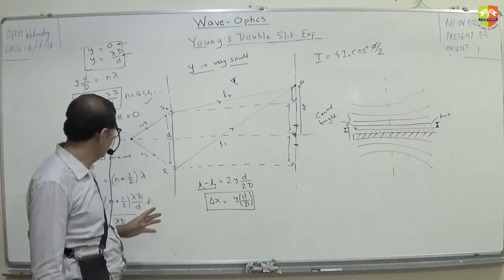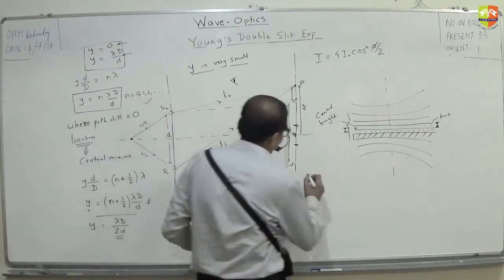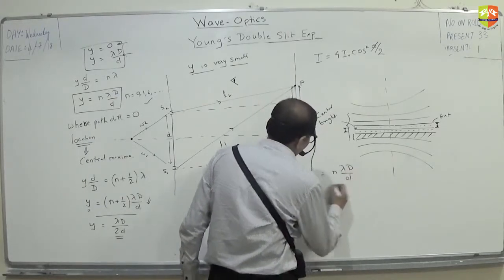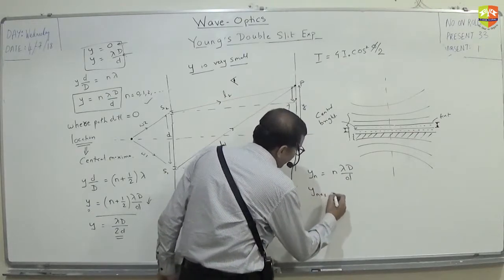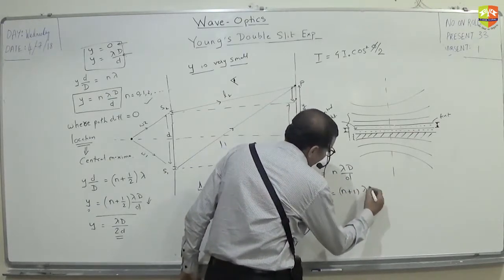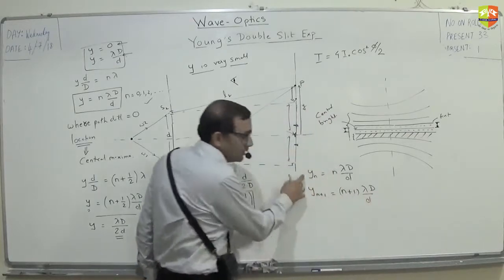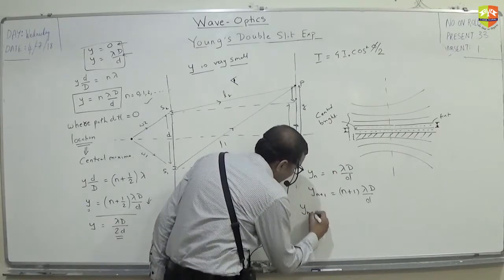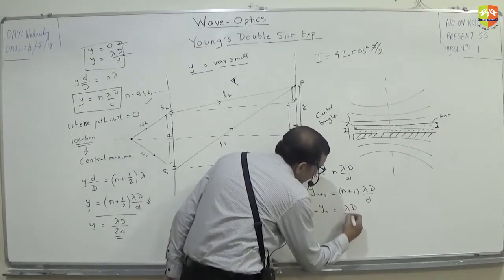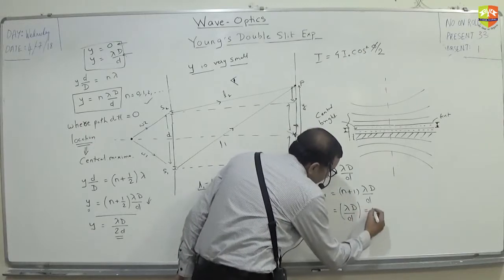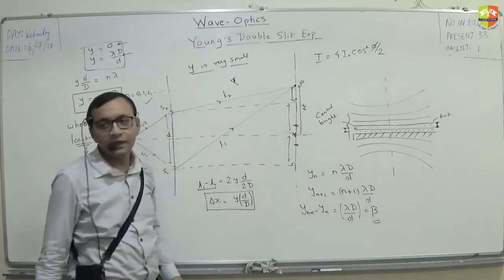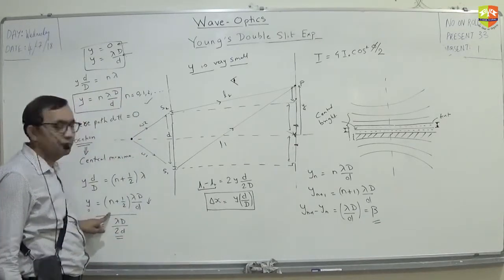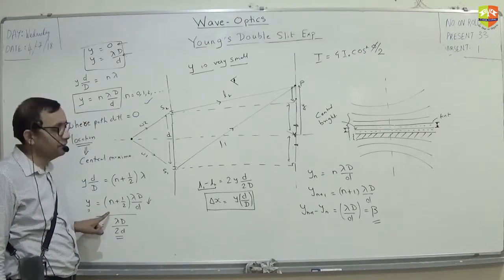The nth bright fringe position is nλD/d. The (n+1)th bright fringe is (n+1)λD/d. The distance between them — the fringe width by definition — is y_(n+1) minus y_n, which equals λD/d. So fringe width β = λD/d. You can also find the fringe width using the dark fringe formula and you will get the same thing.